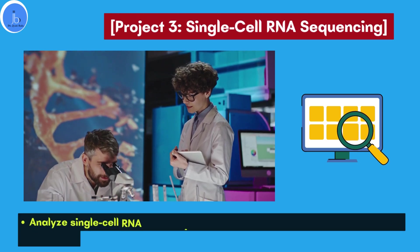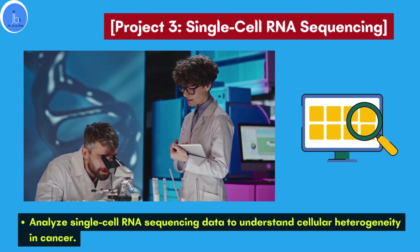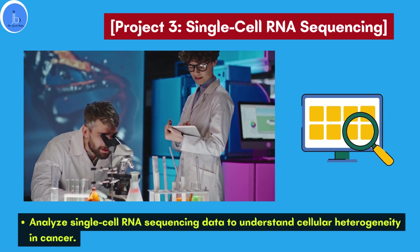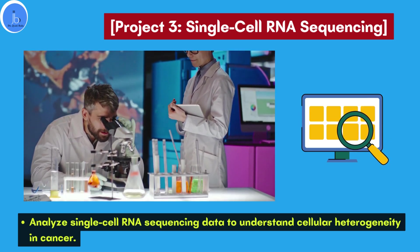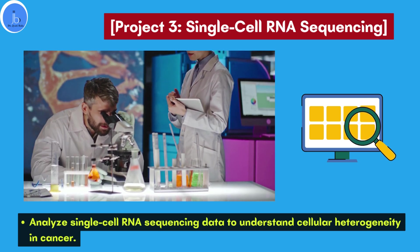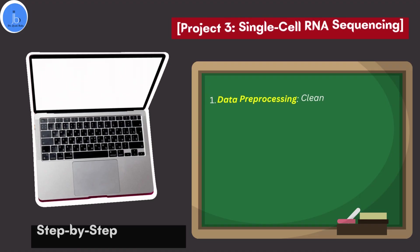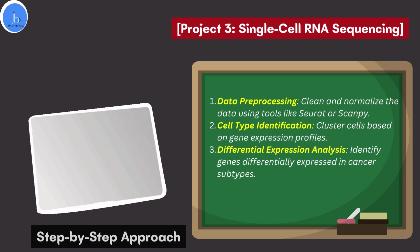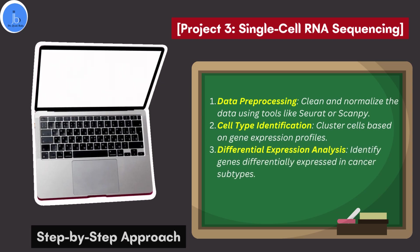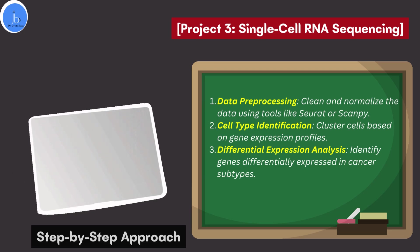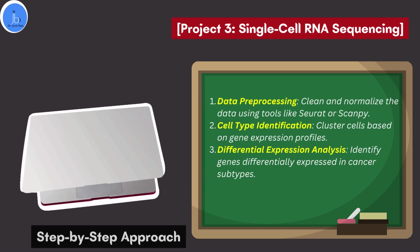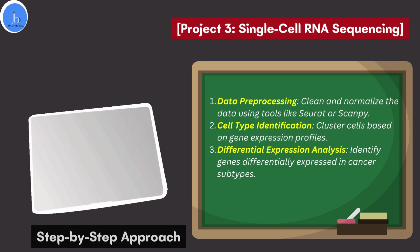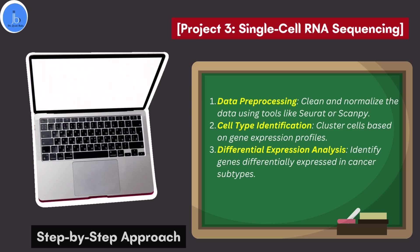The third research project can be done on single-cell RNA sequencing — analyze single-cell RNA sequencing data to understand cellular heterogeneity in cancer. Start with data pre-processing: clean and normalize the data using tools like Scanpy. You can also use cell type identification by clustering cells based on gene expression profiles, and include differential expression analysis to identify genes differentially expressed in a particular cancer subtype.